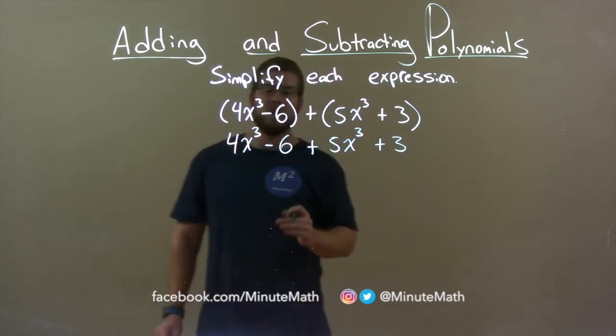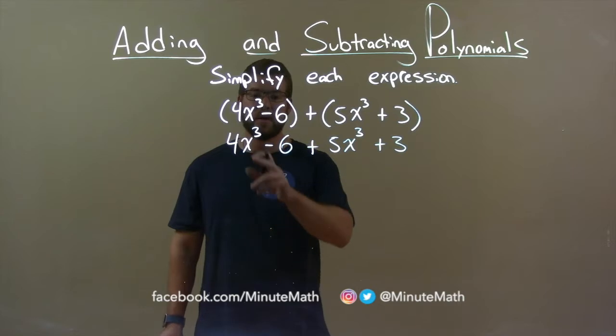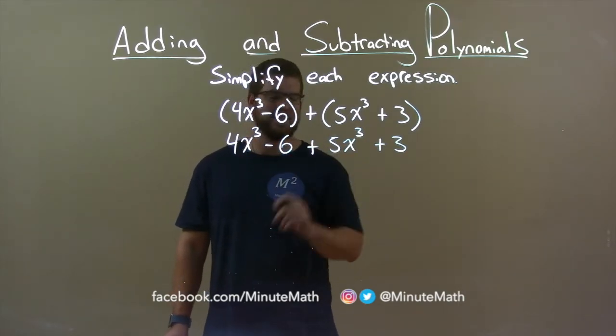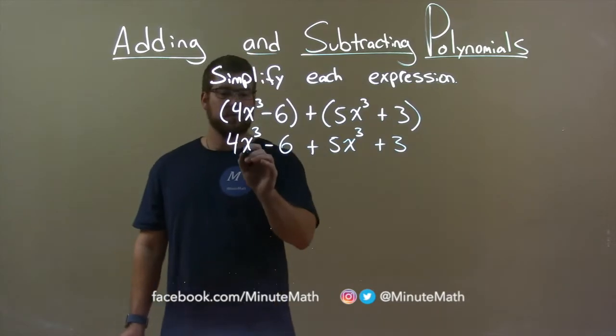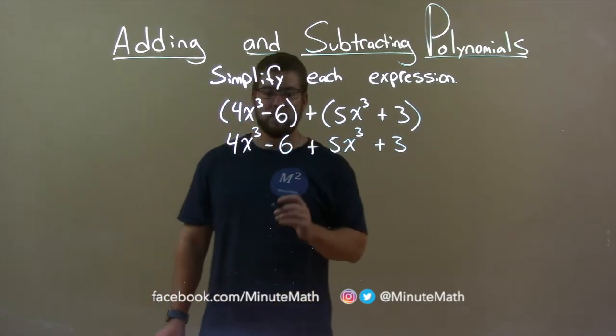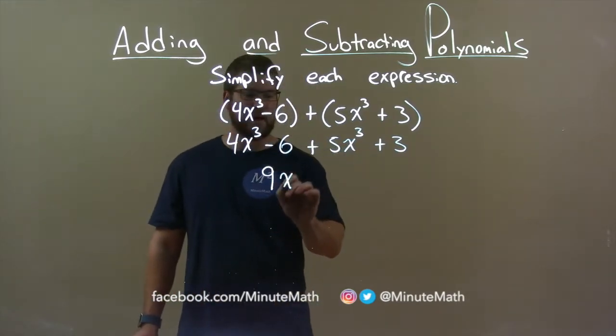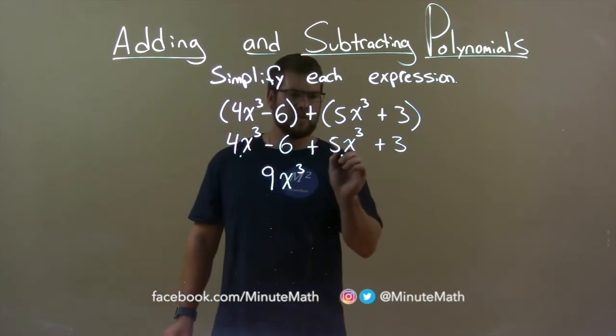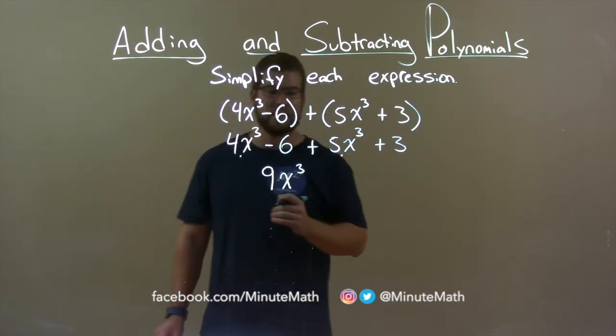Now I want to combine my like terms. My highest degree is the third power, right? x to the third and x to the third. So let's combine the two. 4x to the third plus 5x to the third is 9x to the third. Let me put dots underneath to show that we've brought that part down.